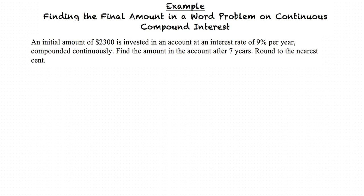Round to the nearest cent. To solve this sort of equation we must use the formula for exponential growth. Exponential growth is modeled as A equals P times e to the power of r times t.